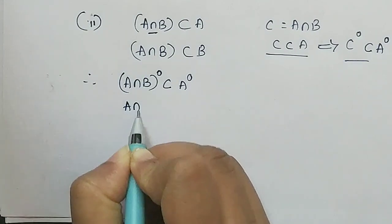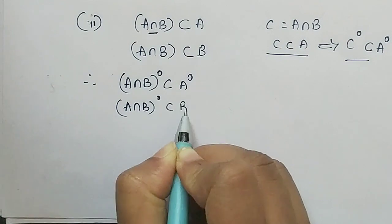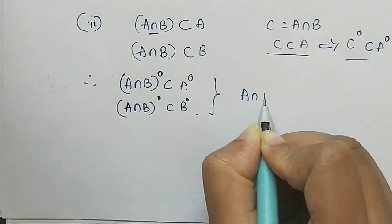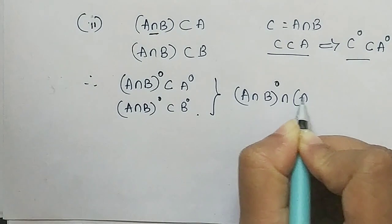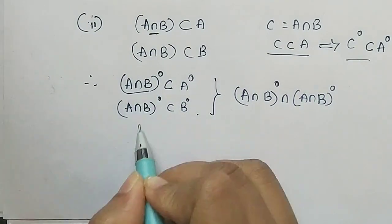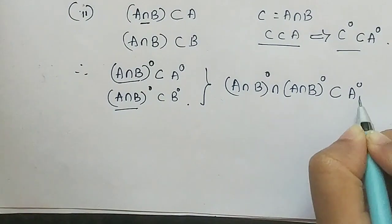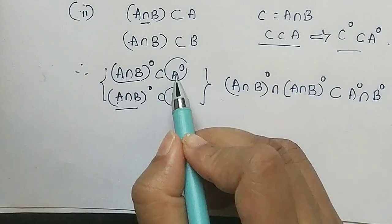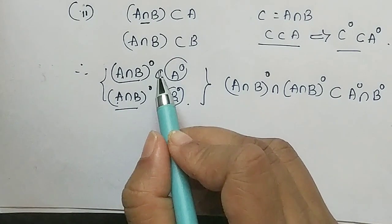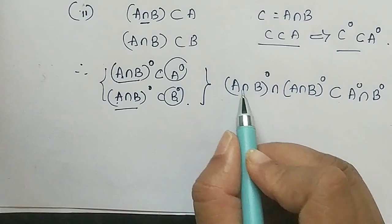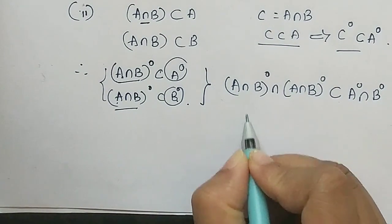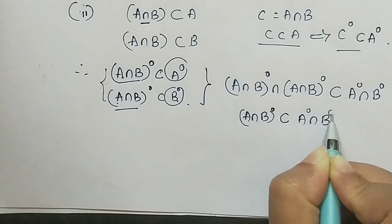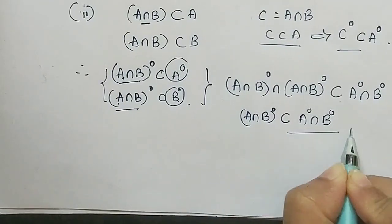A intersection B interior is a subset of A interior, and A intersection B interior is a subset of B interior. Combining these two with the intersection operation, we get A intersection B interior is a subset of A interior intersection B interior. Call this equation 1.